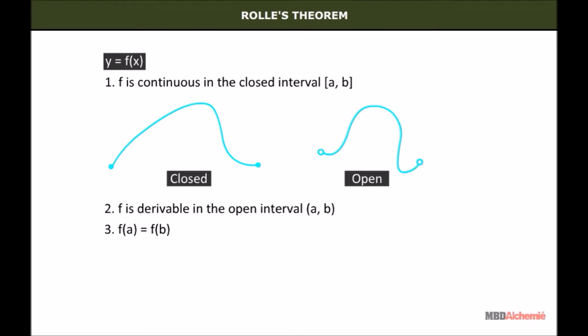Third, f(a) = f(b). Then there exists a number c which belongs to open interval (a, b), such that the first derivative of f at c is equal to 0.